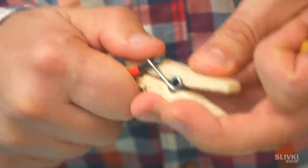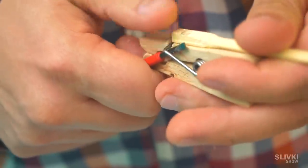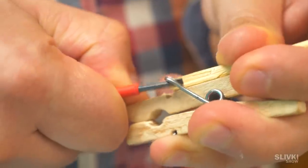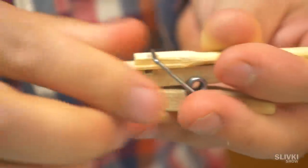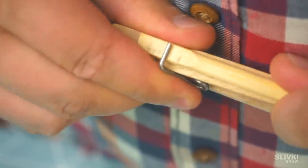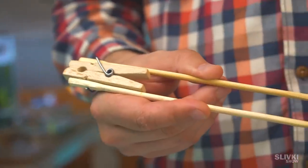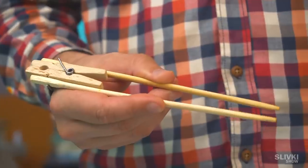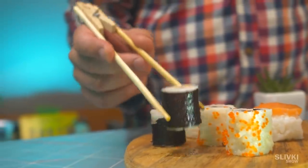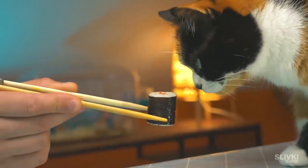Now we modify the sticks with a regular clothespin. Just bend these parts of the spring a little bit and slip the base of the pin underneath them. We do the same with two sticks, and get a device that you can easily and smartly grab sushi with and offer it to your cat.